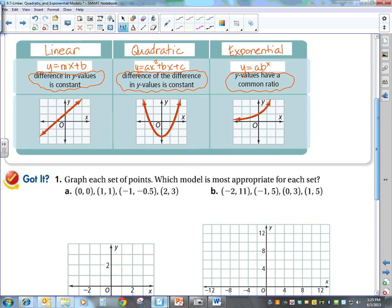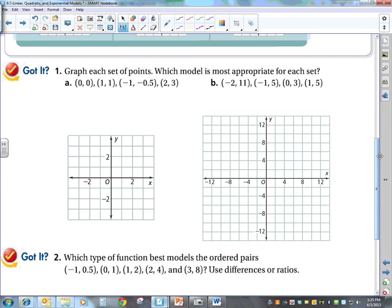So the first method that you can use to decide which function models your data is to actually graph it. So if I come down here and graph the points, I have (0, 0), I have (1, 1), I have (-1, -0.5), and then I have the point (2, 3).